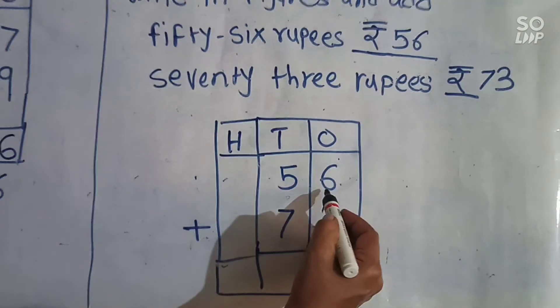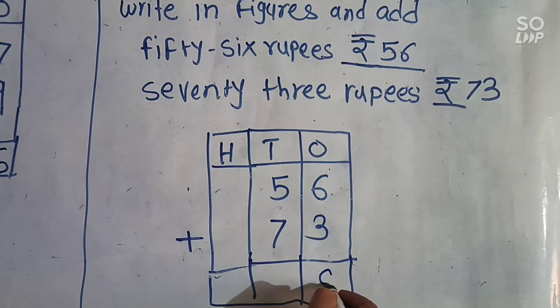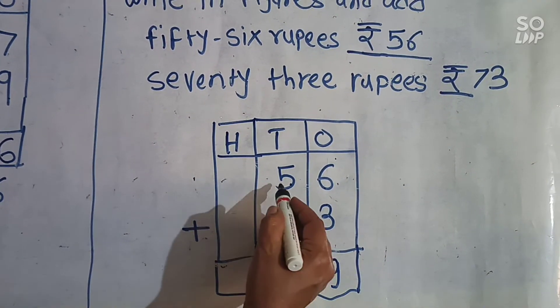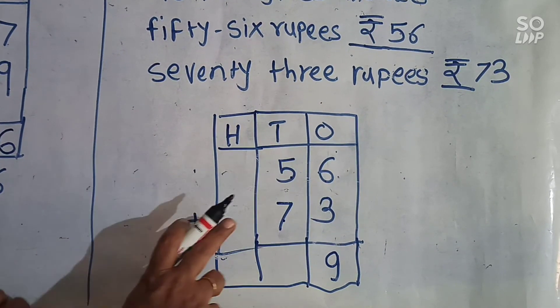Now 1's place, 6 plus 3. 6 and 3, 9. 5 plus 7 in 10's place. 5 and 7.